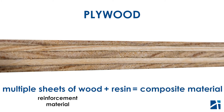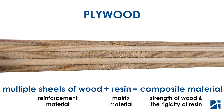We have thin sheets of wood as our reinforcement material and resin as our matrix material. When combined, our composite material — plywood — takes on the strength of wood and the rigidity of resin to make a material that can be used in all sorts of situations.